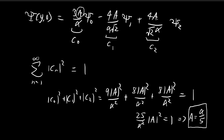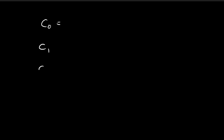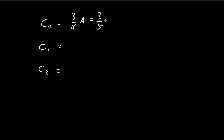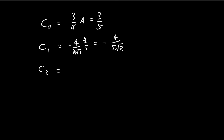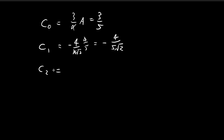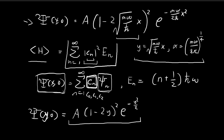Now that a = α/5, we can write out the three constants explicitly. c₀ = (3/α) · (α/5) = 3/5. For c₁: (−4/(α√2)) · (α/5), the α cancels, giving −4/(5√2). For c₂: (4/(α√2)) · (α/5) = 4/(5√2). Note c₂ is the same magnitude as c₁ but with opposite sign. We now have all three constants and are ready to evaluate the expected energy.